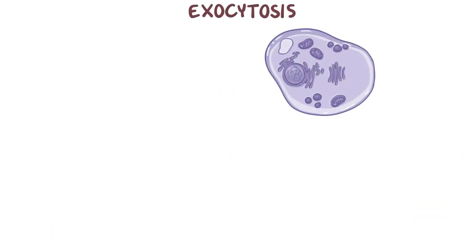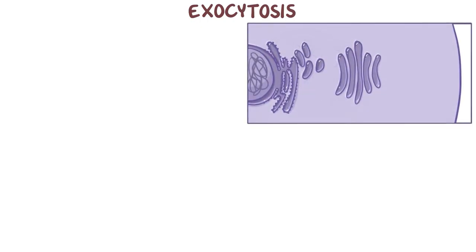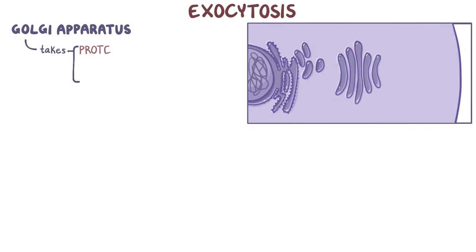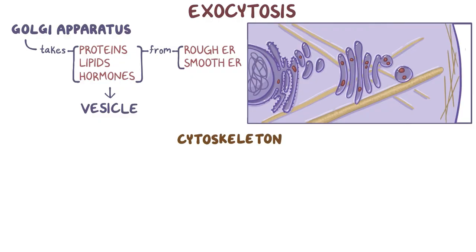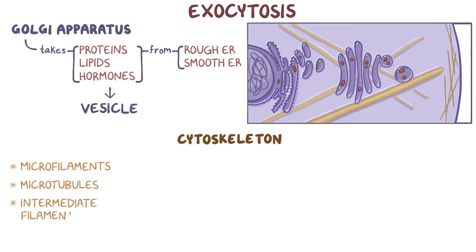Exocytosis, on the other hand, starts deep within the cell, in an organelle called the Golgi apparatus. This organelle takes the proteins, lipids, and hormones that are generated in both the rough and smooth endoplasmic reticulum and packages them into a vesicle that can be transported around the cell using the cytoskeleton. The cytoskeleton is made out of proteins like microfilaments, microtubules, and intermediate filaments, which all provide structural stability.